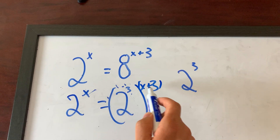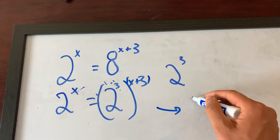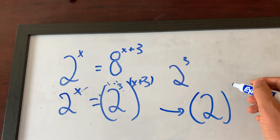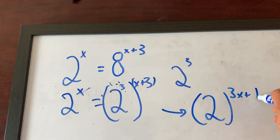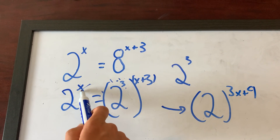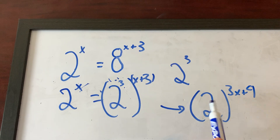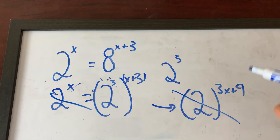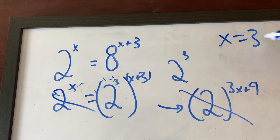Power to a power — you multiply — so this becomes two to the 3x plus 9. Now you have two to the x is equal to two to the 3x plus 9. Same bases, so cross out the bases and all you have to do is worry about the exponents: x equals 3x plus 9.